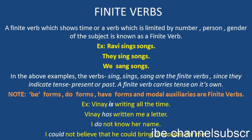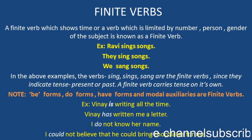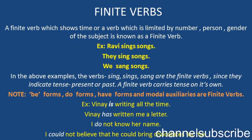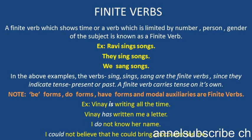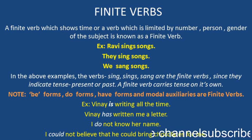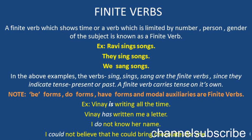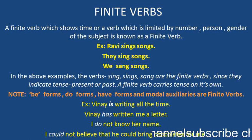Look at the verbs and how they are used in different ways. In the first example, Ravi sings is there. In the second, sing is there. And in the third example, sang is there. Here Ravi is a third person singular, therefore the verb takes an 's'. In the second sentence, they is plural, so the verb is in its original form: sing. And in the third sentence: we sang.